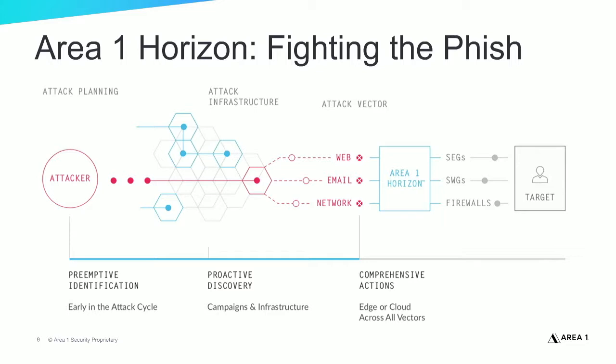To prevent phishing attacks, Area One offers a cloud-based anti-phishing service that stops email, web, and network phishing attacks that other security technologies miss. Area One Security's innovative technology crawls the web continuously and proactively, discovering phishing campaigns and infrastructure before attack launch. On average, we detect malicious sites and payloads a full 24 days before industry benchmarks. By proactively hunting for new phishing infrastructure as it's set up, Area One gains early visibility into phishing sites, payloads, malware, and compromised servers before campaigns launch. The resulting insight powers the Area One Horizon Anti-Phishing Service to detect and block phishing threats that other security technologies miss.